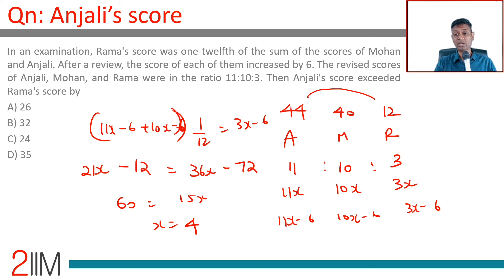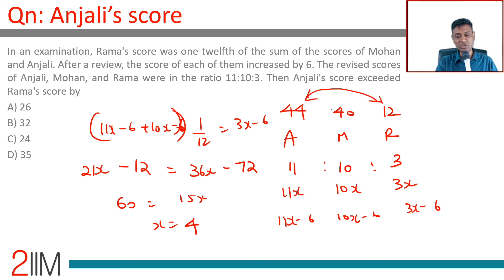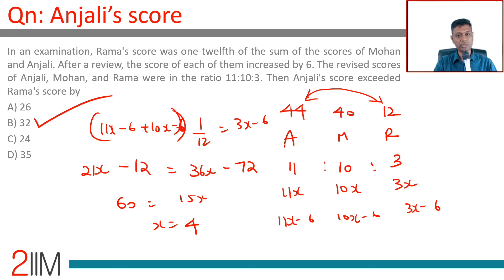The difference between Anjali's score and Rama's score is 32. Even before the revision it would have been 32, because all of them are each getting 6 more — the difference is not going to change. 44 minus 12 equals 32.